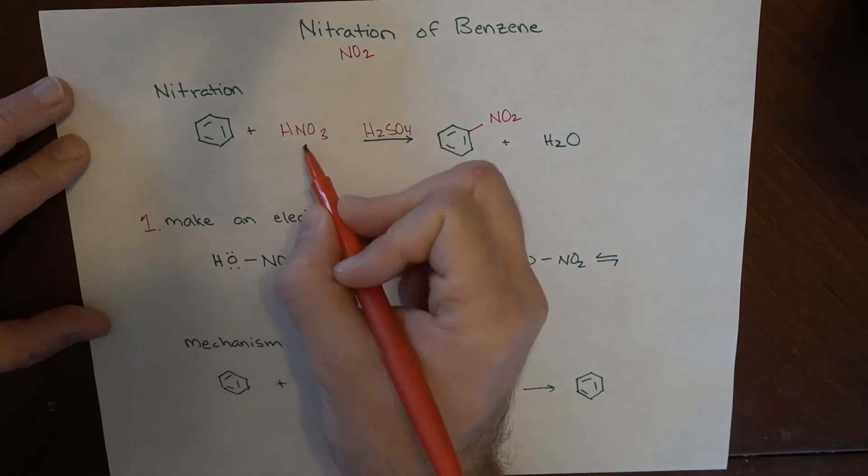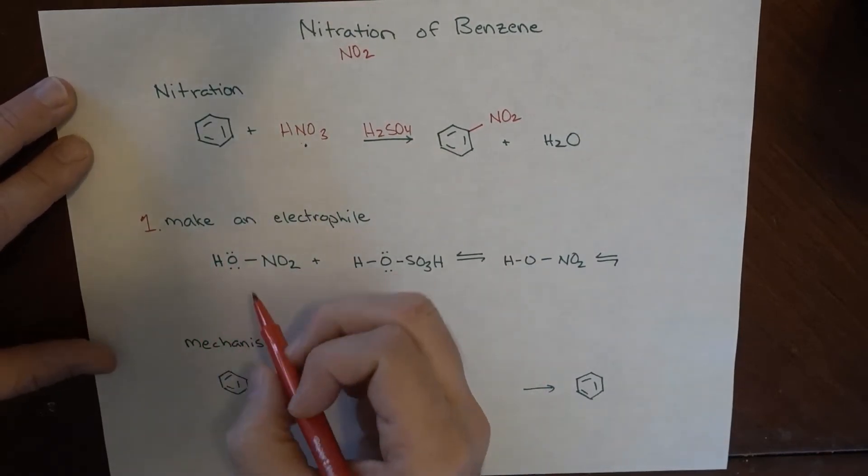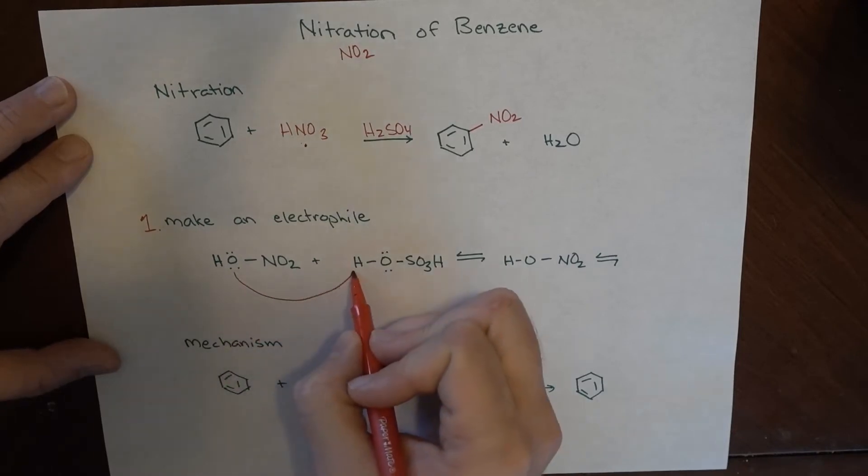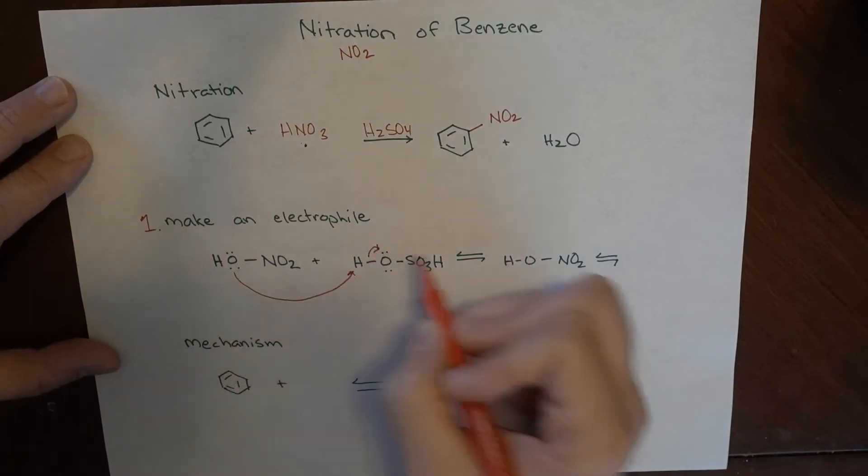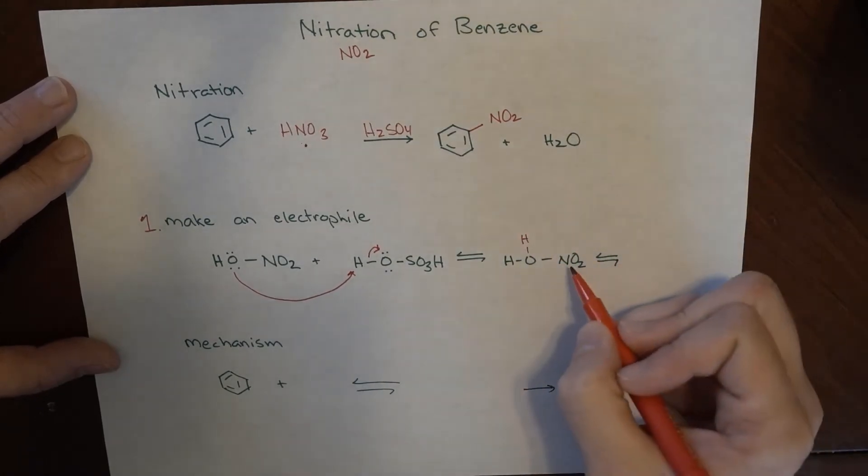Here's nitric acid, just rewritten accentuating an OH. What ends up happening is electrons from here grab onto this H, which kick back to here, and what we're left with now is NO2 with H2O attached to it, which as you know is positively charged and is an amazing leaving group.